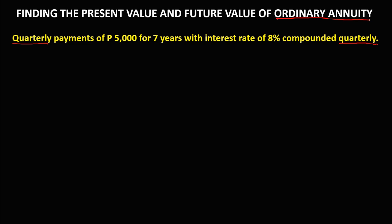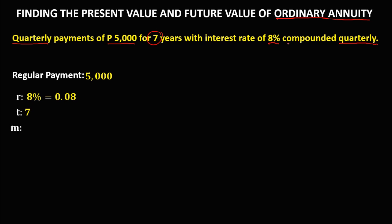First, we need to list all the given values. The regular payment R is 5,000 pesos. The rate is 8%, or 0.08 in decimal. The time is 7 years. For the compounding period, since it is compounded quarterly, that is 4 times a year, so M is equal to 4. For the number of periods, using the formula M times time: 4 times 7 gives us N equals 28.